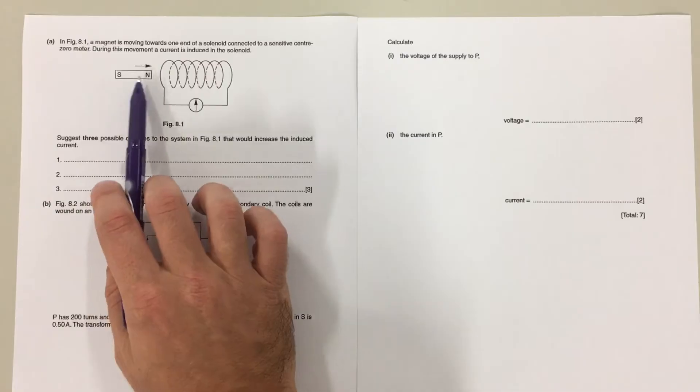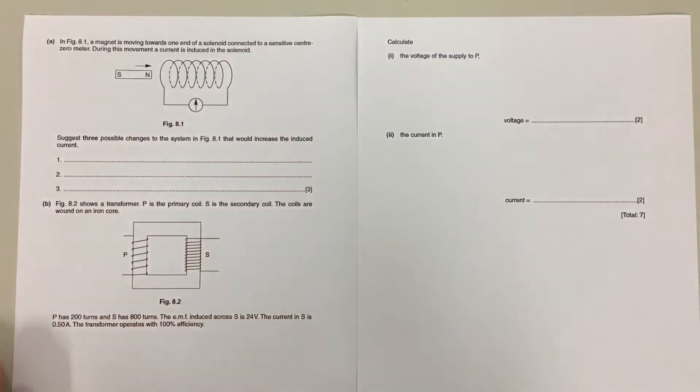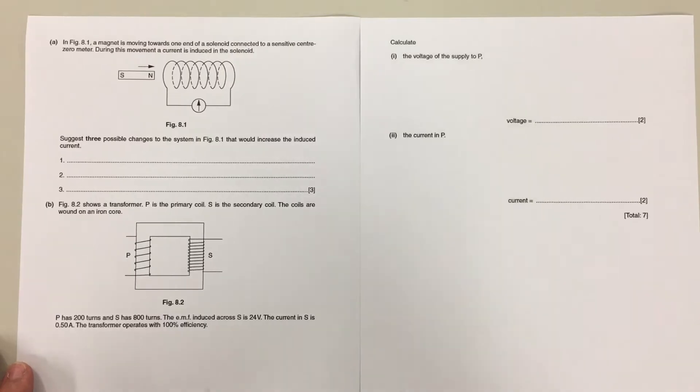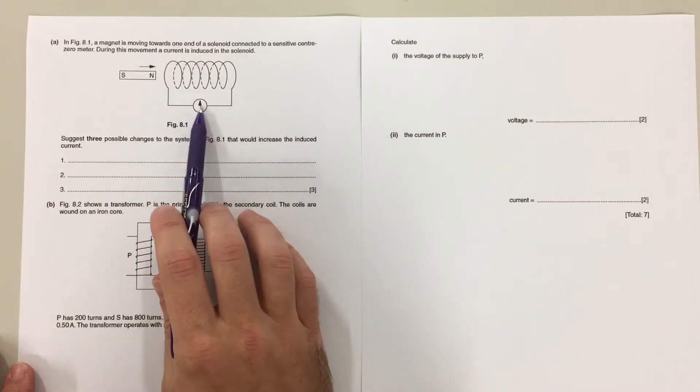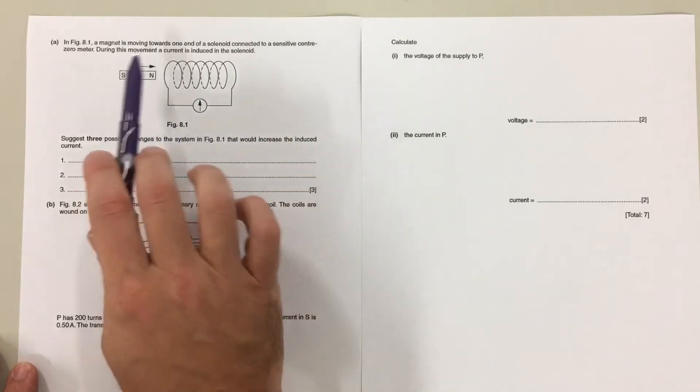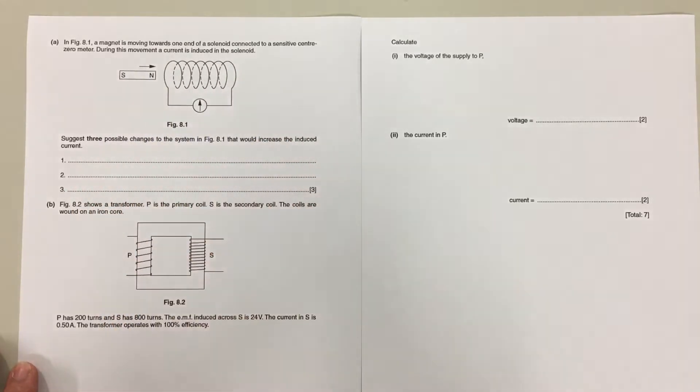Over here we've got a magnet and it's moving into a coil or a solenoid. Now the magnet's moving this direction and the coil is connected to some sort of meter. It doesn't say what sort of meter, but it's some kind of meter that's going to measure the current or the voltage produced.